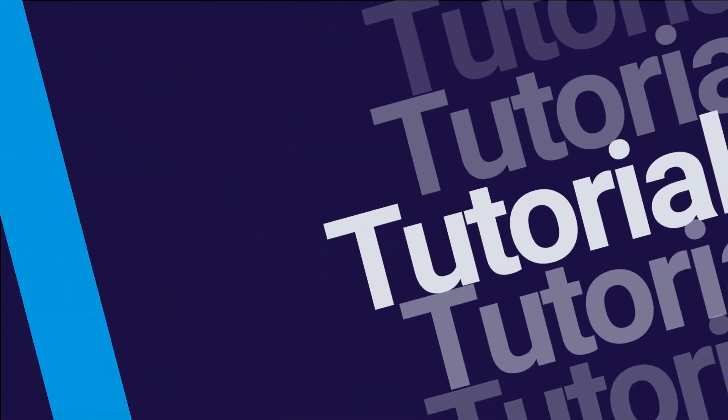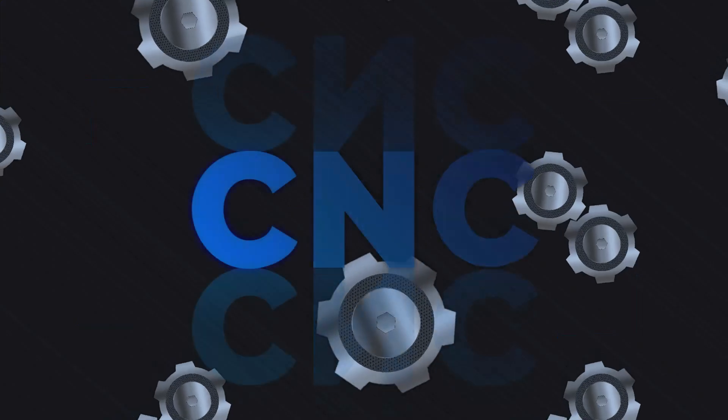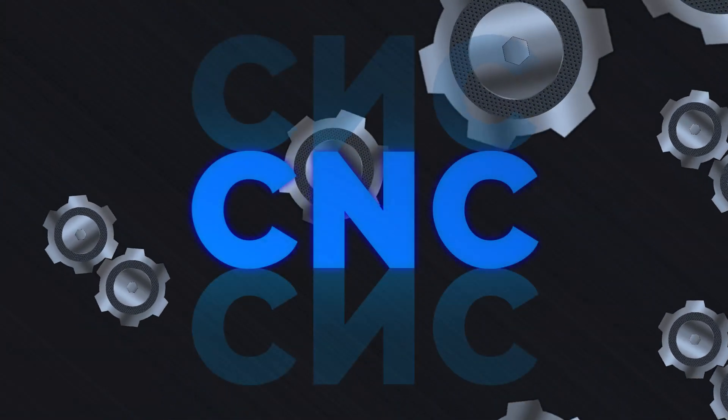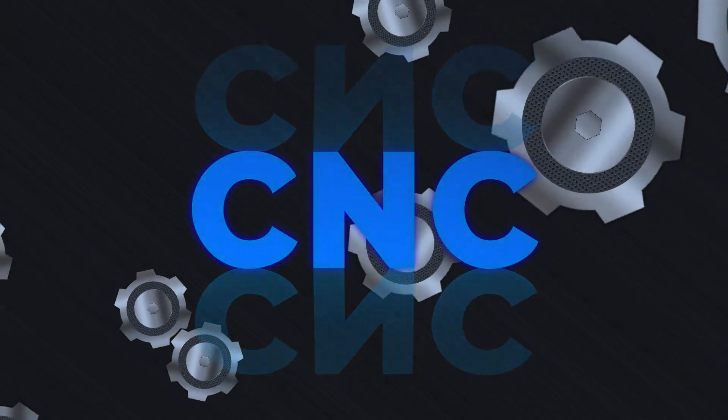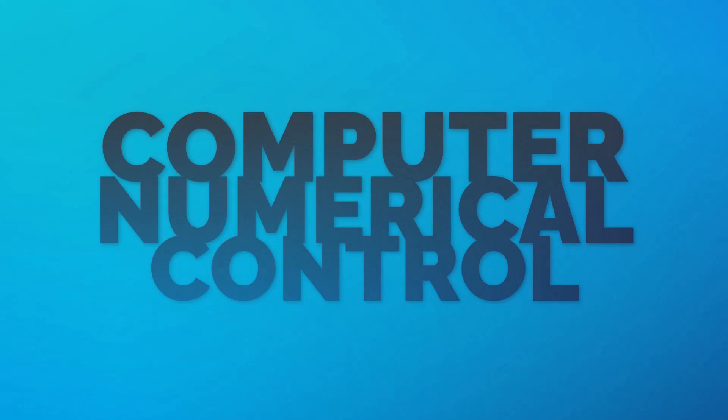Welcome back to our CNC tutorial series. Today, we're diving into the G-codes G54 to G59. These codes help us set different work offsets, enabling multiple workspaces on a single machine. Let's get started.